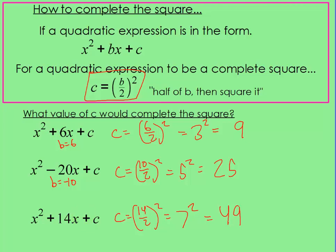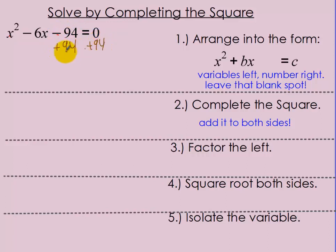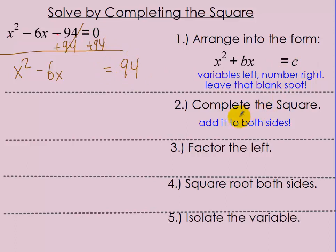Now we're going to use that to solve a problem using completing the square. Going back to that first example: x squared minus 6x minus 94 equals 0. Your first step is to arrange it in the form x squared plus bx equals c, meaning the variable parts are on the left and the number parts are on the right — and leave a blank spot. So add 94 to both sides, which gives you x squared minus 6x equals 94.